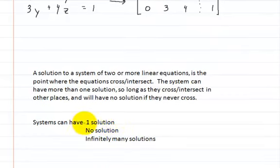If they only cross in one spot, you'll have that one solution. If they're parallel, they'll never cross. Or if they're right on top of each other, they'll have infinitely many solutions.